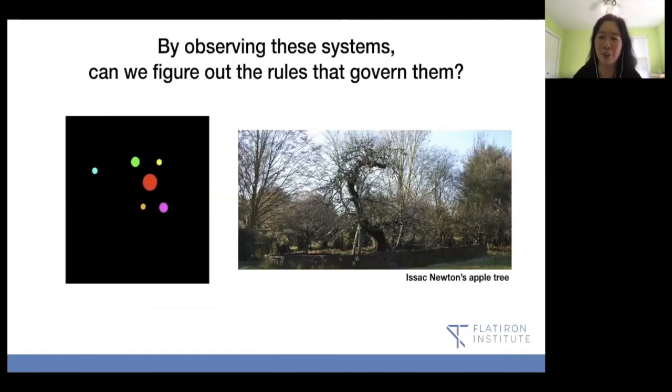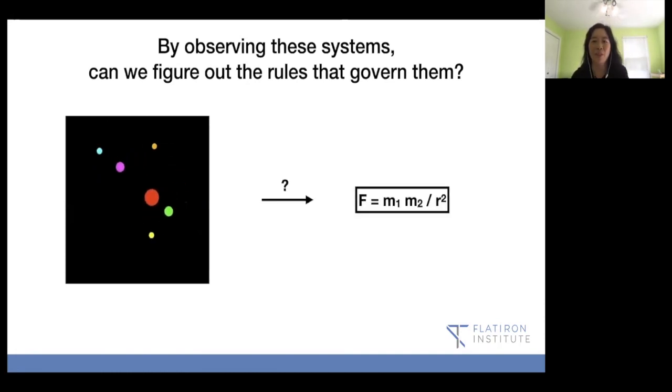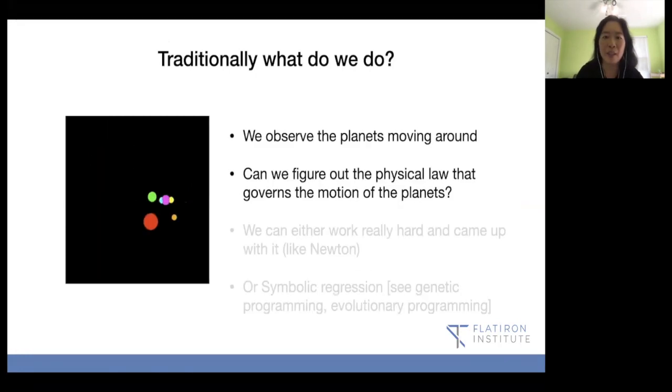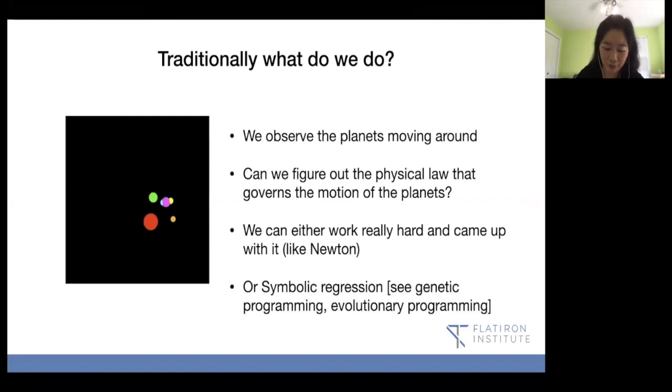Usually, or traditionally, we have something like a really smart person, or at least that's how the story would be, we're told. This is Isaac Newton's supposedly apple tree in his manor. You can sit underneath the tree and figure out how these all related to each other, and come up with this traditional classical mechanics law. You can observe the planets moving around, can we figure out the physical laws that govern the motion of the planets. We can either work super duper hard, and come up with it sort of like what Newton's rumored to have done. Or as you have seen earlier, there's some powerful techniques out there, and one of them is called symbolic regression that you just saw some demo. There's a long line of history about that came and related to this with symbolic regression. You can check out genetic programming, evolutionary programming, they're all sort of related and not super different.